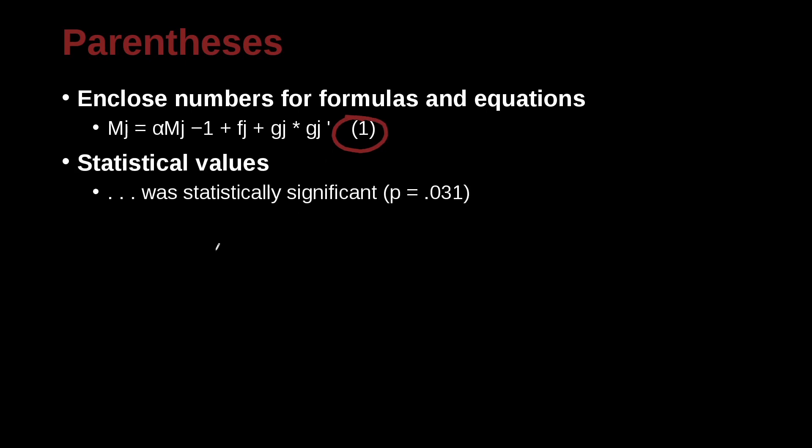You can enclose numbers for formulas and equations, of course. So that would be this idea here. This is formula number one, formula number two. Statistical values, of course, we also use parentheses. So when you're writing a value, for example, a p-value, you separate it from the text using the parentheses. Always remember a space before the parentheses and then a space after. Unless it's the punctuation, then there's no space.